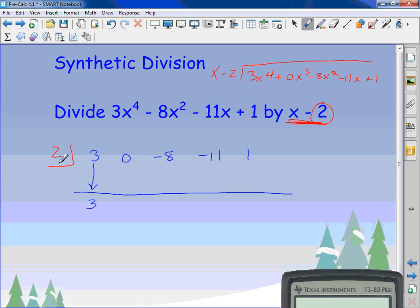2 times 3 is 6. So I put a 6 in there. What's 0 and 6? 6. Now I take 2 times 6, gets me 12. What's negative 8 and 12? 4. What do you think I have to do now? 2 times 4 gets me 8. Negative 11 and 8 gets me negative 3. This is going to be a negative 6. So this gives me a negative 5.